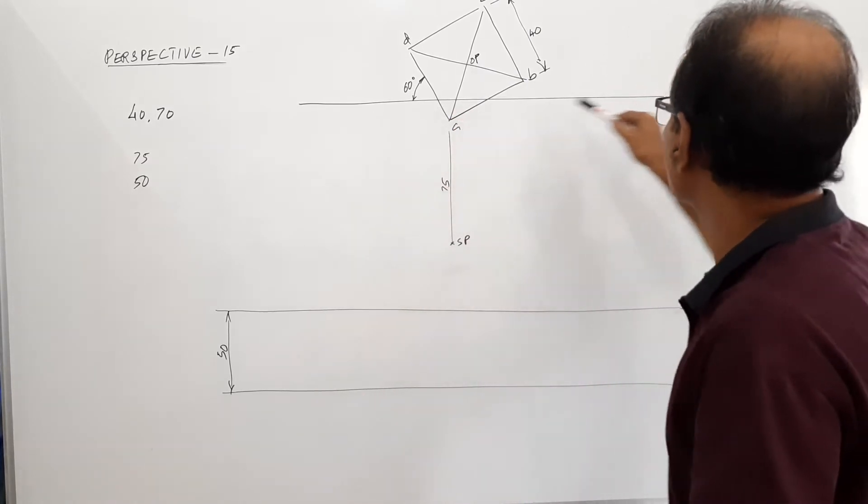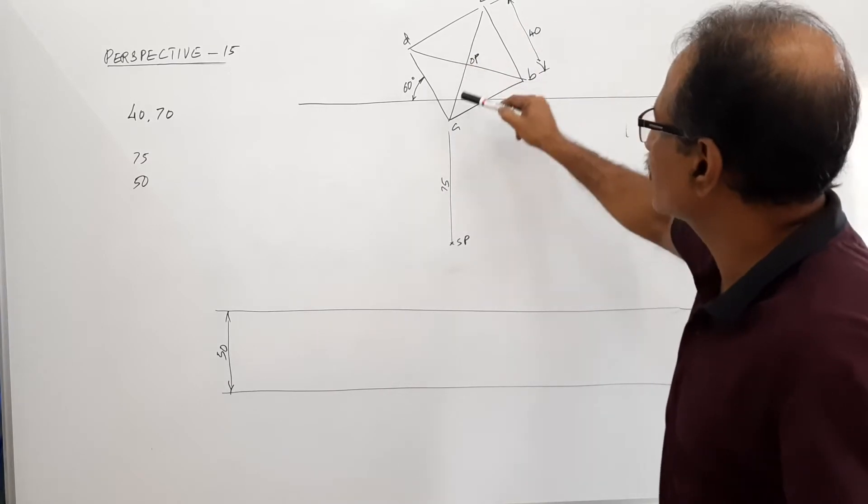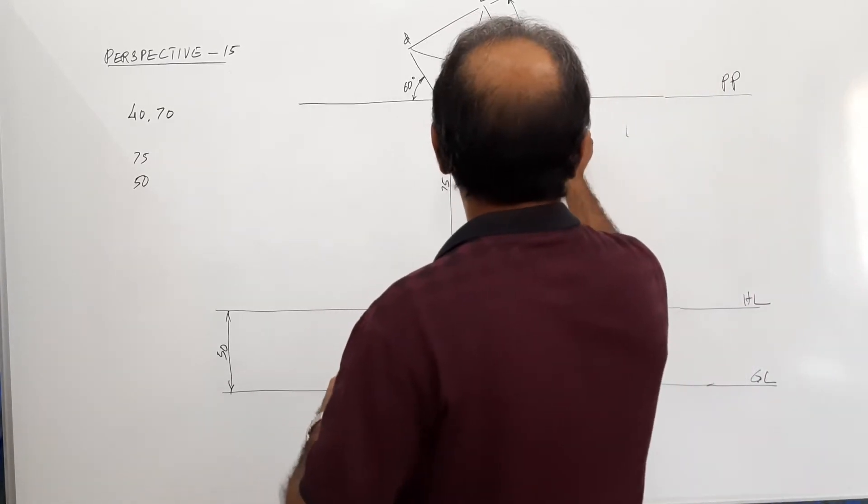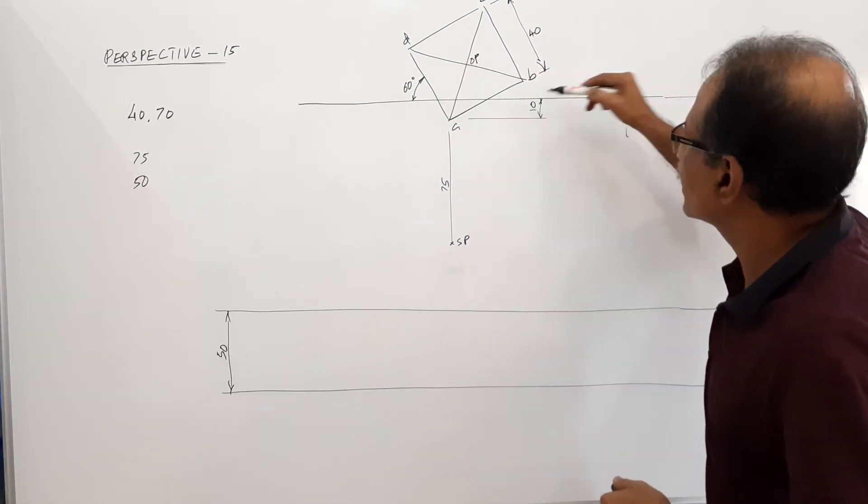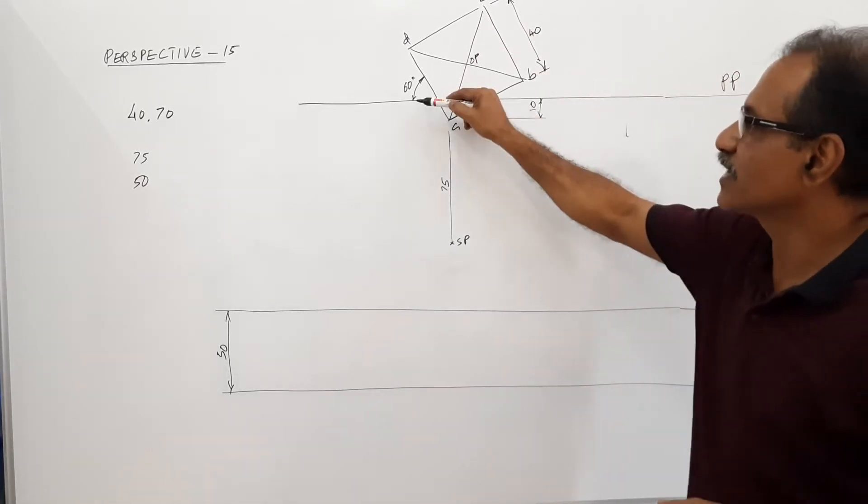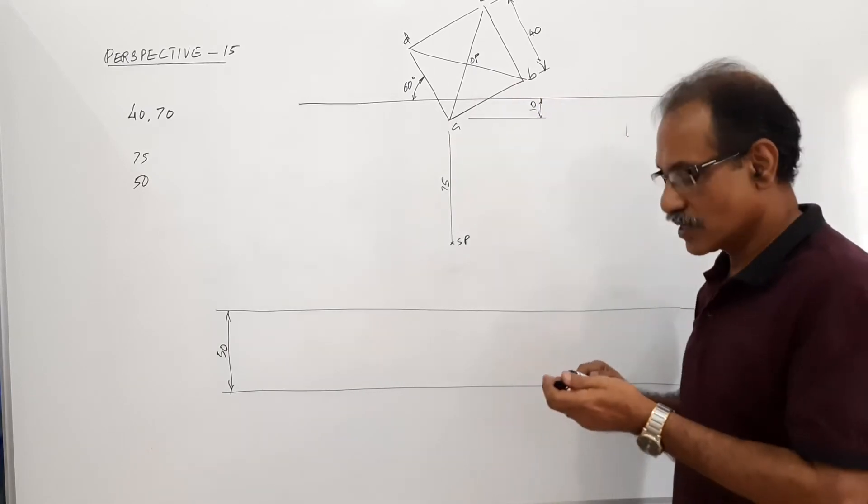So this is what you do. Draw BP, draw the square with the corner A. Corner A, 10 mm in front of BP. One side is making 60, so the other side is making 30. Agreed?